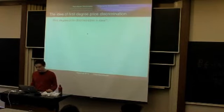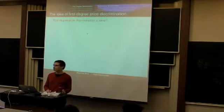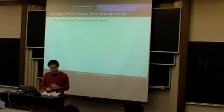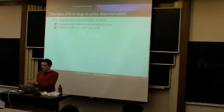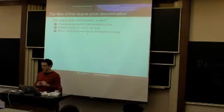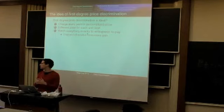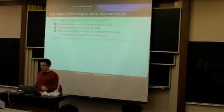First-degree price discrimination means you charge every person a different price, and you charge them a different price for each unit that you sell them. For every unit sold to every person, you charge them exactly how much they're willing to pay for that unit. Because this exactly matches everyone's willingness to pay, you're able to capture the full consumer surplus.